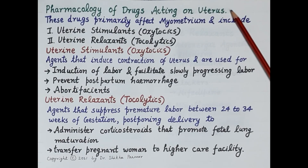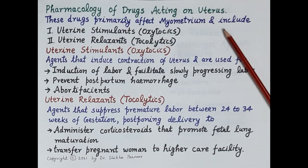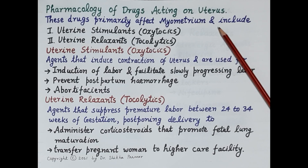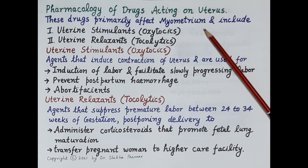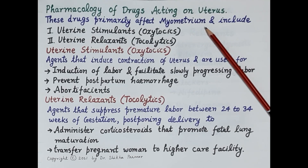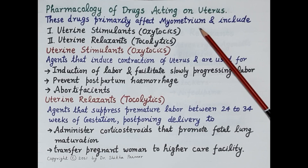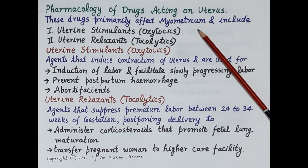Hello students. In today's video we are going to talk briefly on pharmacology of drugs acting on the uterus. These drugs primarily act on the myometrium, a tissue layer made up of smooth muscle cells that forms the wall of the uterus. Contraction of myometrium causes uterine stimulation or uterine contraction, whereas relaxation of myometrium causes relaxation of the uterus.